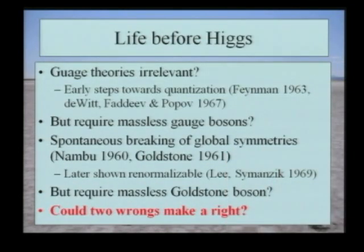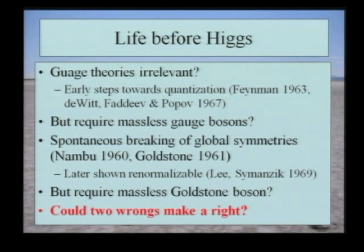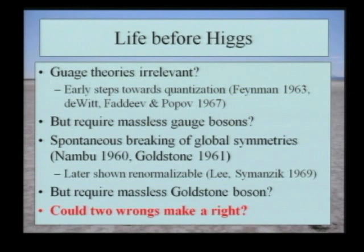Let's cast our minds back to 1964. Even I was not doing particle physics in 1964. At that time most people would have thought that gauge theories were pretty much irrelevant. There had been progress towards quantization of unbroken gauge theories, in particular by Feynman, DeWitt, Faddeev, and Popov. But they required massless gauge bosons — so how could they be realistic?